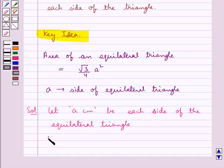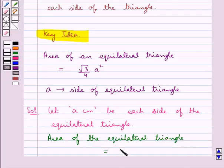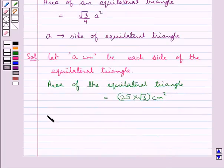We are given the area of the equilateral triangle is equal to 25 into root 3 cm squared.